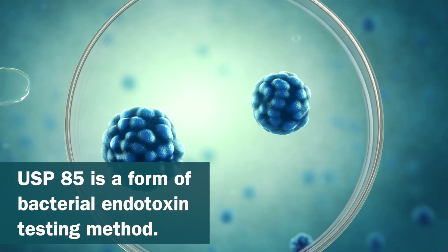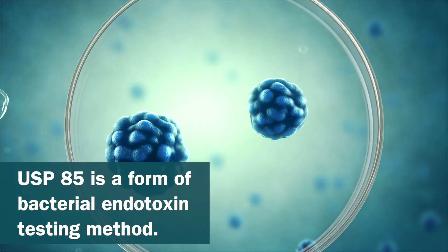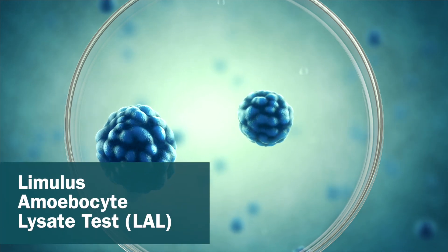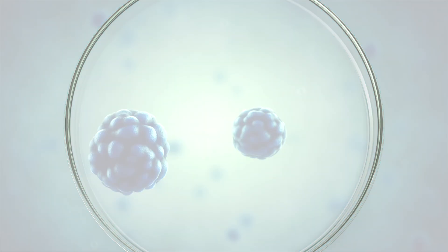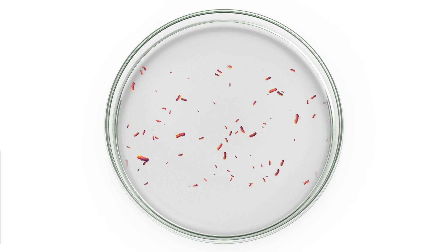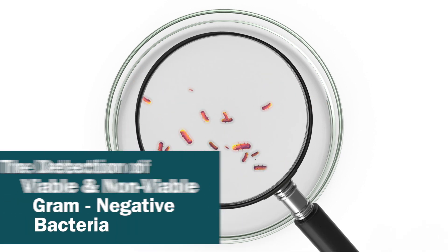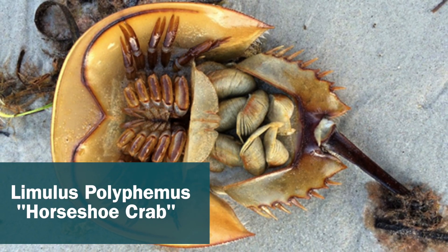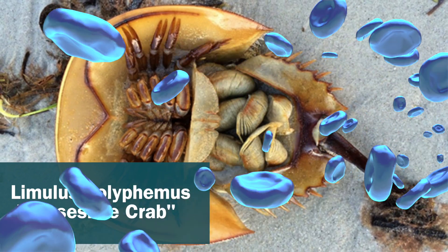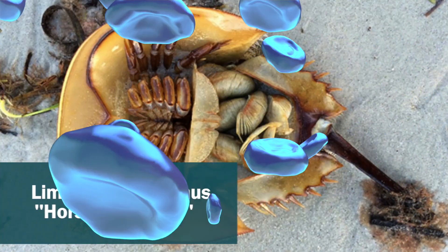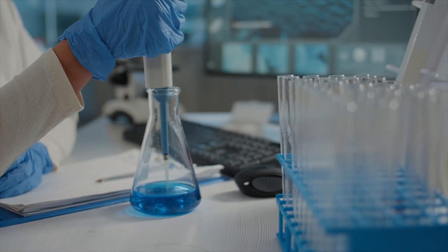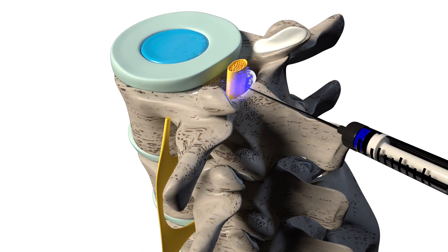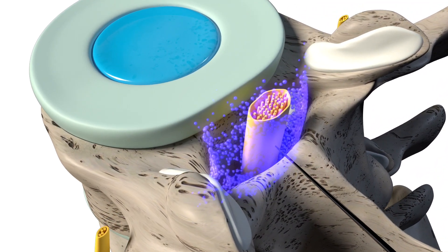USP-85 is a bacterial endotoxin testing method. Although there are multiple testing methods available, the most used test of this kind is the Limulus amebocyte lysate test, or LAL for short. The LAL test is a simple method for the detection of viable and non-viable gram-negative bacteria. This involves extracting blood cells from a horseshoe crab by the name of Limulus polyphemus. LAL reacts with bacterial endotoxin or lipopolysaccharide, which is a membrane component of gram-negative bacteria. The primary purpose of the LAL test is to apply USP reference standards to parenteral pharmaceuticals and medical devices that come into contact with blood or cerebral spinal fluid.